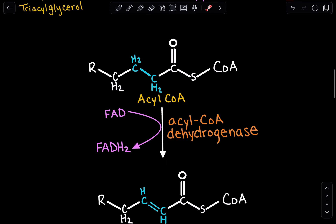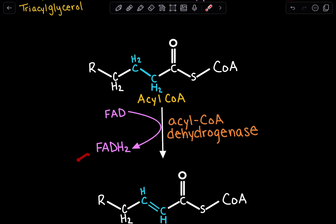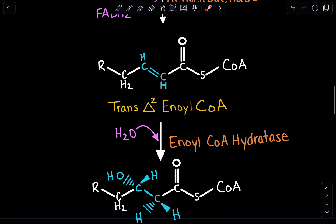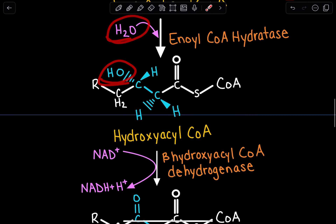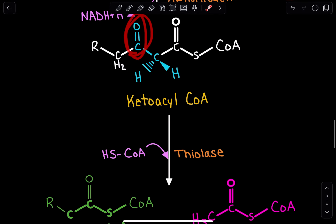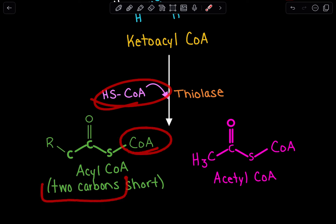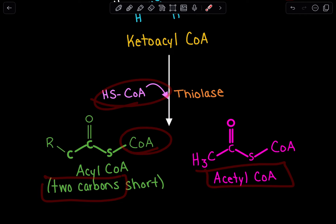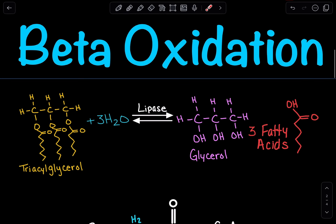To quickly recap: we had our oxidation-reduction reaction with the dehydrogenase enzyme, producing FADH2, which goes to the electron transport chain to produce ATP. Then we hydrated to introduce a hydroxyl and convert it into a carbonyl to regenerate acyl-CoA. In the final step, a coenzyme A group is attached to the acyl-CoA, two carbons shorter, and we produced an acetyl-CoA. Beta-oxidation is a process in which we break down fatty acids to yield energy, occurring in rounds.